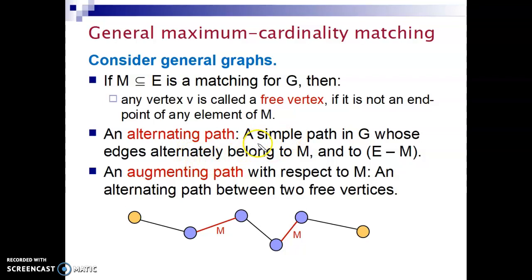Now let's define alternating path. An alternating path is a simple path in the graph whose edges alternatively belong to matching and to the set of edges that does not belong to matching.